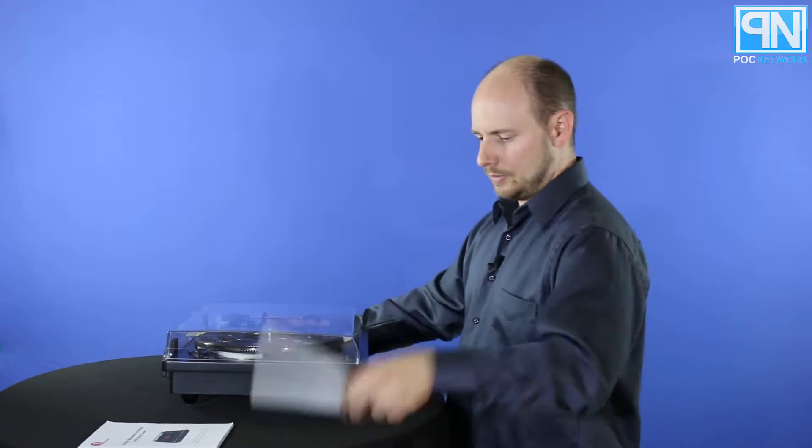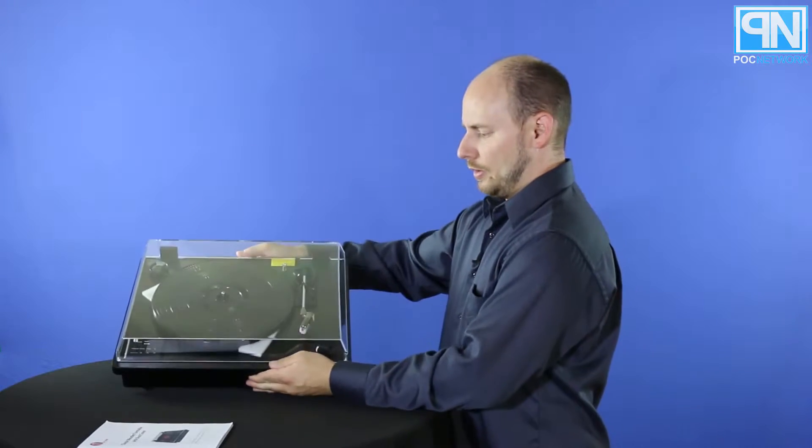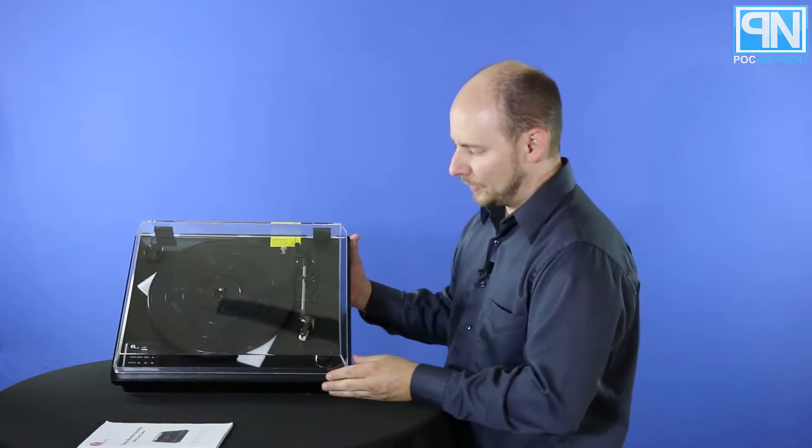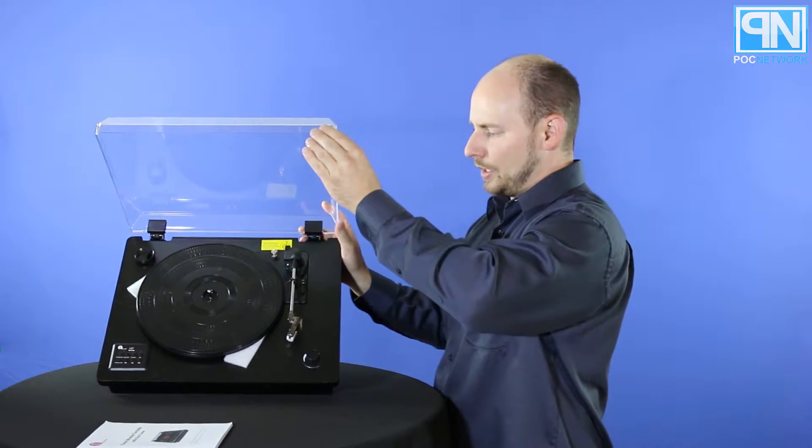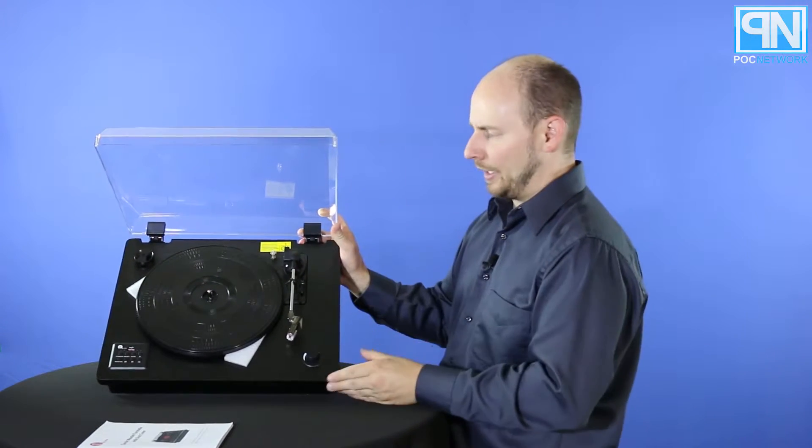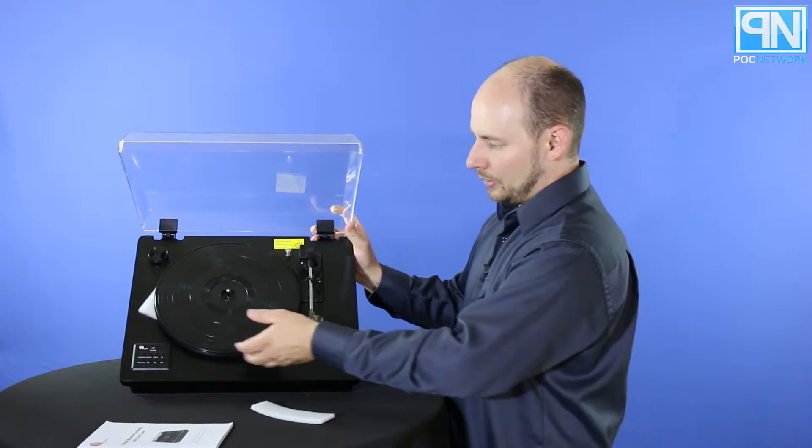There you have it - a record player. This is 1by1's classic wooden turntable with dust cover, aka plastic lid. You have little pieces of foam here to help protect the turntable.